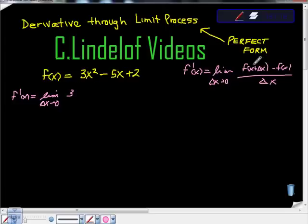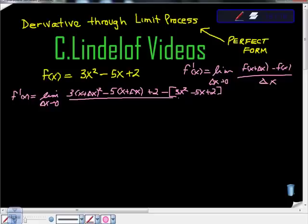So it says here x plus change in x, so 3x plus change in x squared, minus 5 times x plus change in x plus 2 minus the quantity 3x squared minus 5x plus 2 all over the change in x.